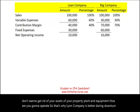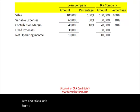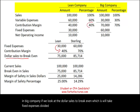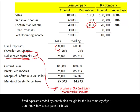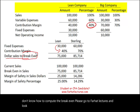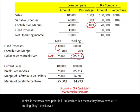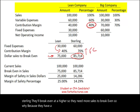Let's also look from a break-even and margin of safety perspective for lean and big company. The dollar sales to break even is fixed expenses divided by contribution margin ratio. For lean company, the break-even point is $75,000 — meaning they break even at $75,000. Big company will break even at a higher level, meaning they need more sales to break even, because they have a higher fixed cost.